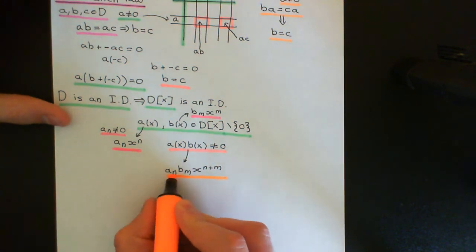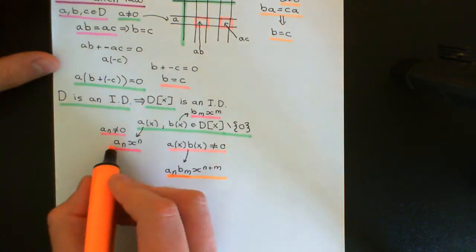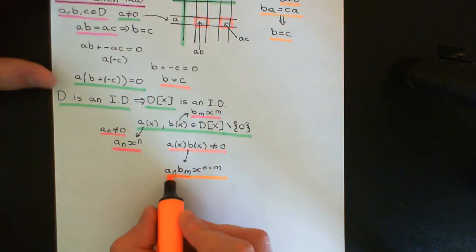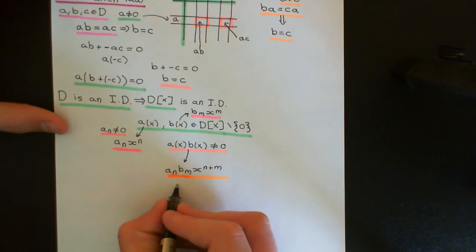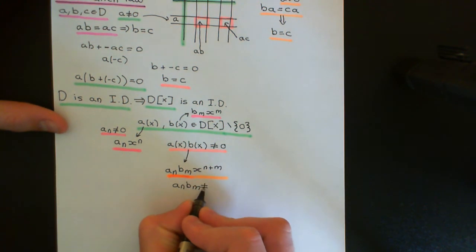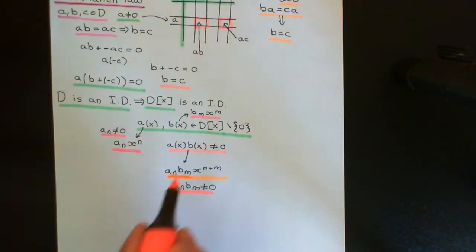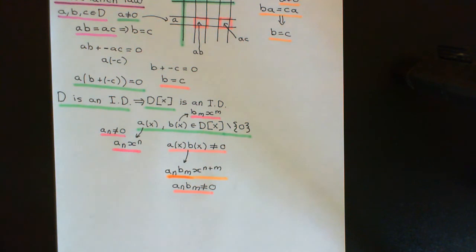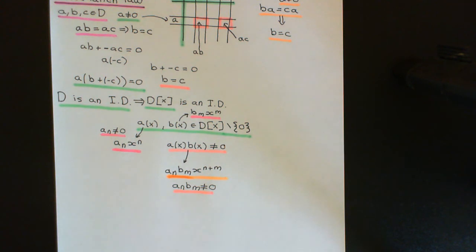The new leading coefficient is a_n times b_m. Now, if both of these are not equal to zero in the initial integral domain — which was my assumption since they were leading coefficients — then we know that when we multiply them together, because we're working with an integral domain, we get a non-zero element. So a_n times b_m will not equal zero, meaning this polynomial is not the zero polynomial, because its leading coefficient is not equal to zero, and therefore it cannot have all coefficients equal to zero.